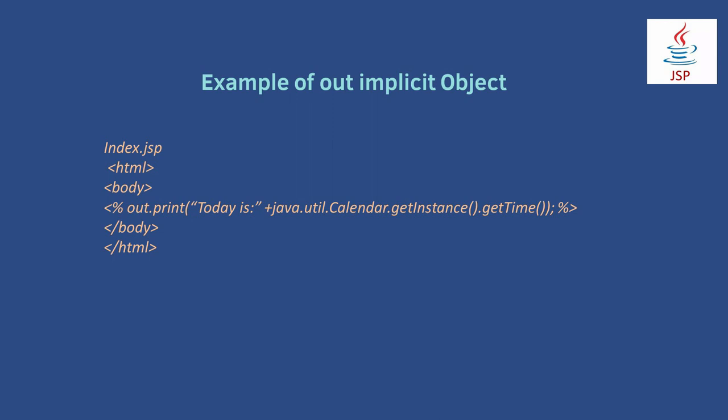You can see the example of the Out implicit object. In this example I have to print the time. We use an HTML tag, then a scriptlet tag. Under the scriptlet tag, I use the Out object — out.print() is the method used to print the time. We use the plus operator and Java's utility package, specifically the Calendar class under the utility package, and Calendar has a getTime() object which tells the current time.